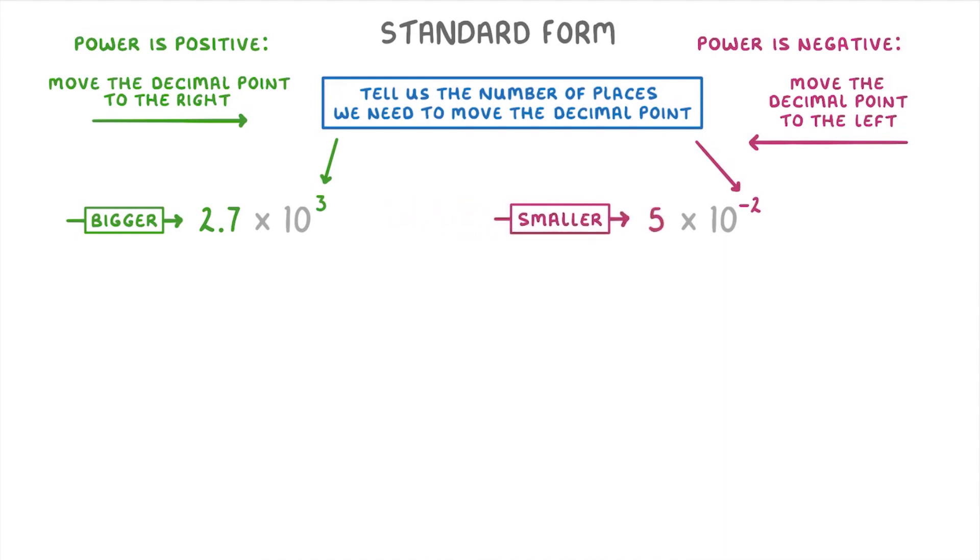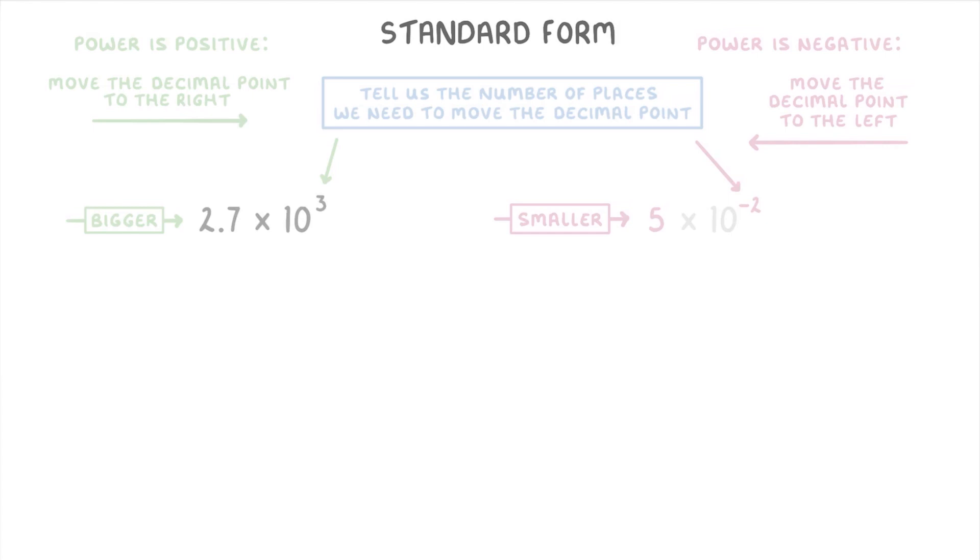So for 2.7 × 10^3, the positive 3 tells you that you're going to have to move the decimal point three places to the right. To do this, we write out the 2.7, and then using little arrows, move the decimal point three places to the right: one, two, three, which means that our new decimal point would be here.